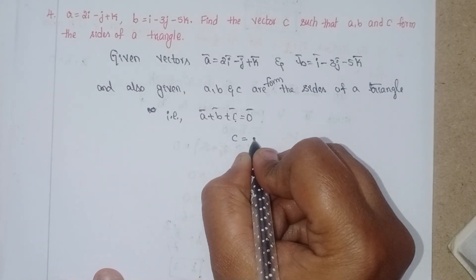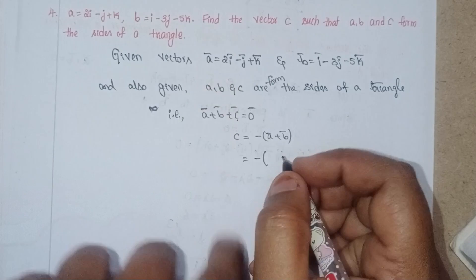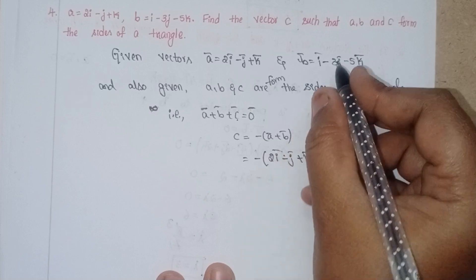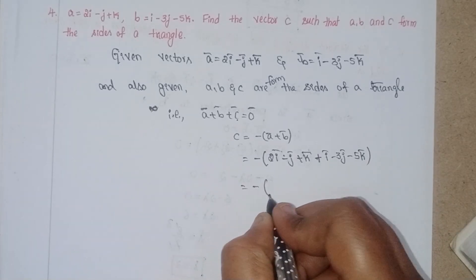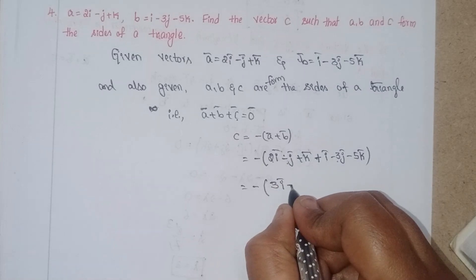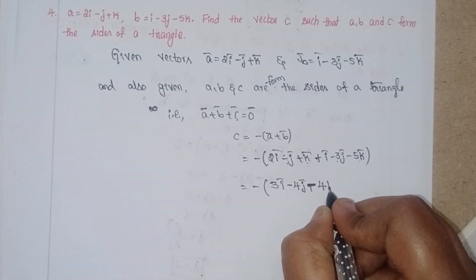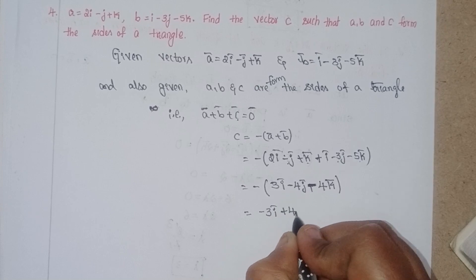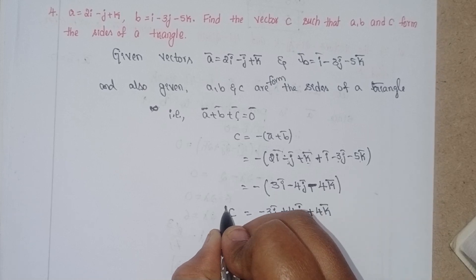That is, C equals minus of (A plus B). So C = minus of (2i - j + k) plus (i - 3j - 5k), which gives minus of (3i - 4j - 4k), so C vector = -3i + 4j + 4k.